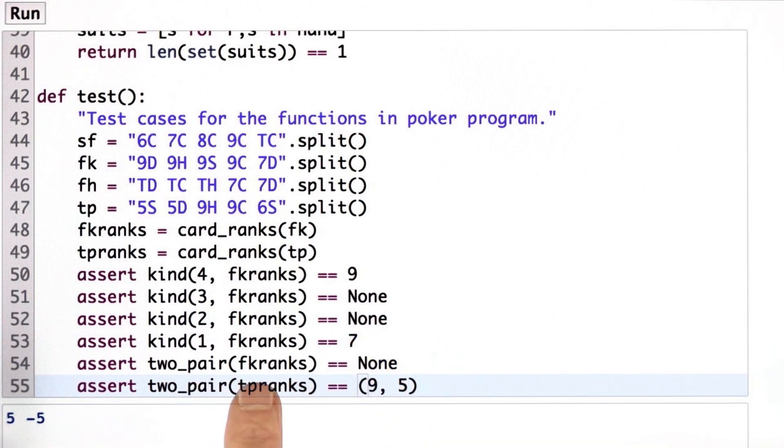And then in terms of two pair, does the four of a kind have two pair? No, it doesn't. So we return none. And does the two pair have two pair? Yes, it does. A nine and a five.